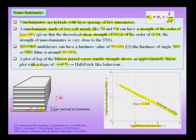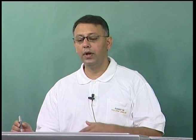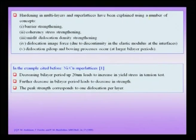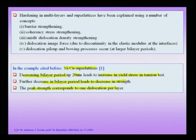In the Hall-Petch relationship, we originally described yield stress and later extended it to hardness. Now we are saying it is not only grain size d which follows this relationship, but also the bilayer period in a nano laminate structure. In nickel-copper superlattices, decreasing bilayer period up to about 20 nanometers leads to an increase in yield stress. Further decrease leads to a decrease in strength. The peak strength corresponds to about one dislocation per layer.